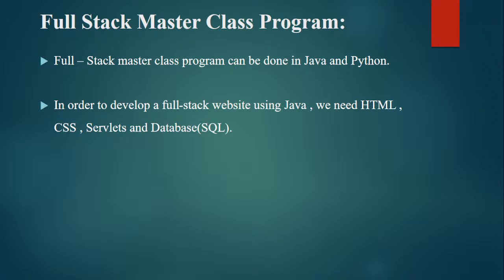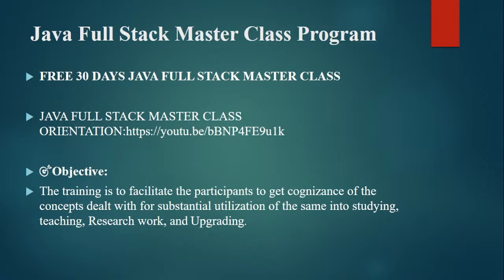Whenever we receive any kind of form elements — for example, the customer name, customer transaction ID, transaction date, and timestamp — everything will be stored securely in the database. In order to develop a full stack website using Java, we require HTML for the front-end, CSS for styling, servlets for business logic, and SQL (Structured Query Language) for database interaction.